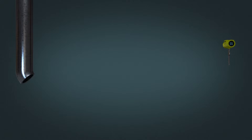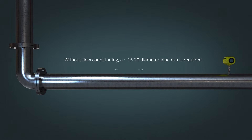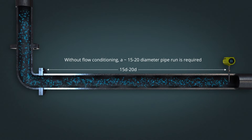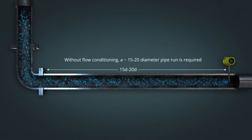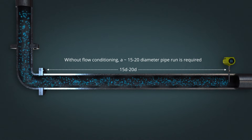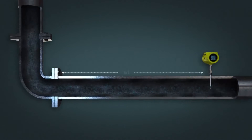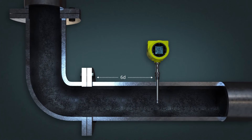However, in many plants and process piping systems, finding or adding the required amount of straight run is simply impractical or unfeasible for technical and/or economic reasons.